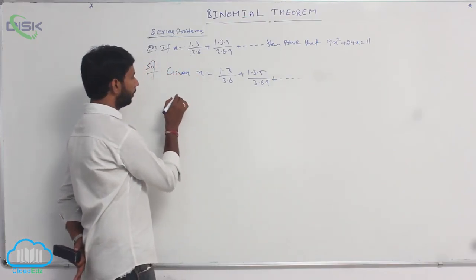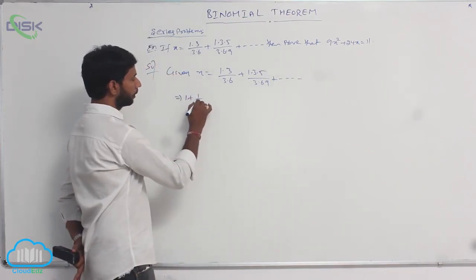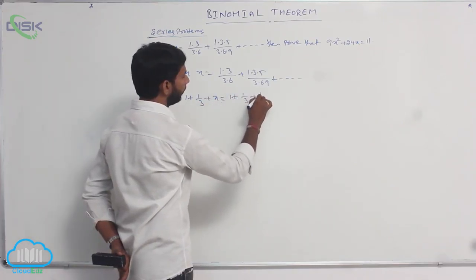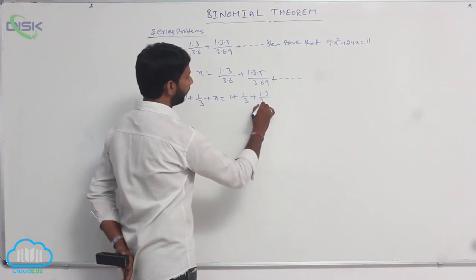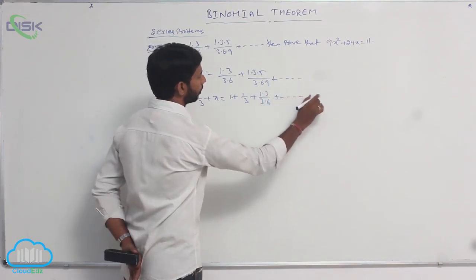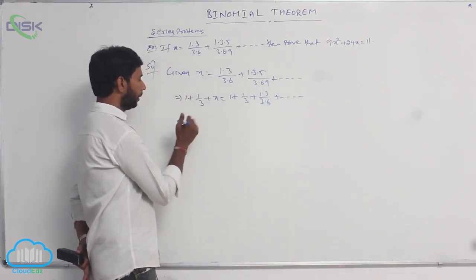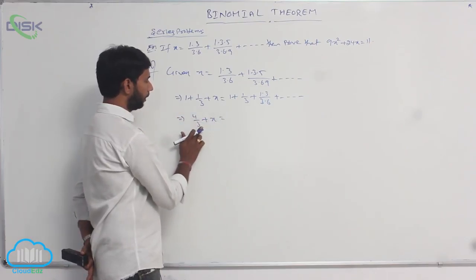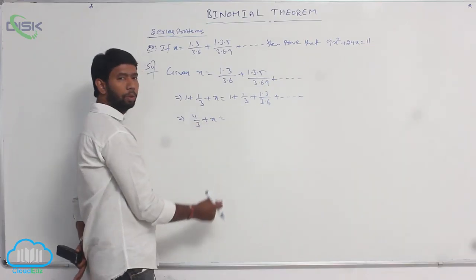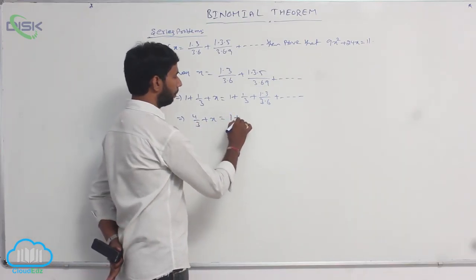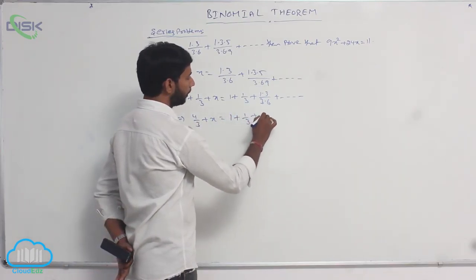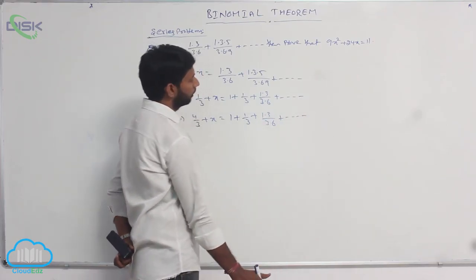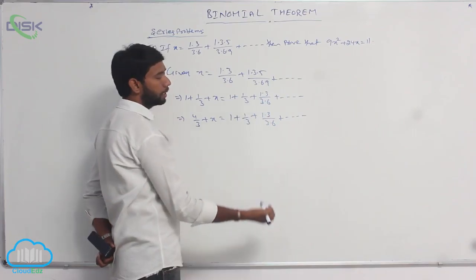Adding 1/3 + 1 on both sides, we get 1 + 1/3 + x is equal to 1 + 1/3 + (1·3)/(3·6) + and so on. Here 1 + 1/3 is 4/3. So 4/3 + x is equal to 1 + 1/3 + (1·3)/(3·6) + and so on.